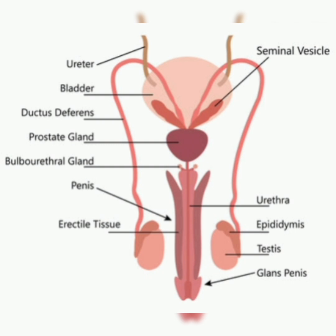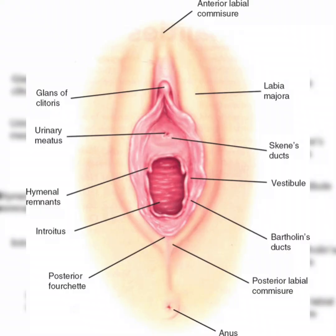The prostate gland is a walnut-sized gland below the bladder that adds fluid to the ejaculate, nourishing the sperm. The urethra runs through its center. The bulbourethral glands are pea-sized glands that produce a clear fluid that lubricates the urethra and neutralizes any residual acidity from urine.